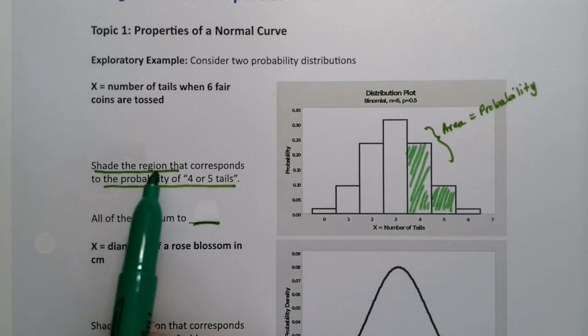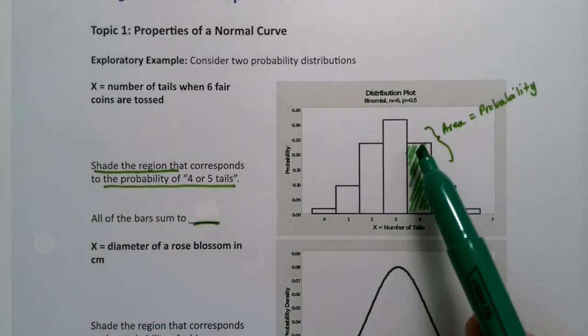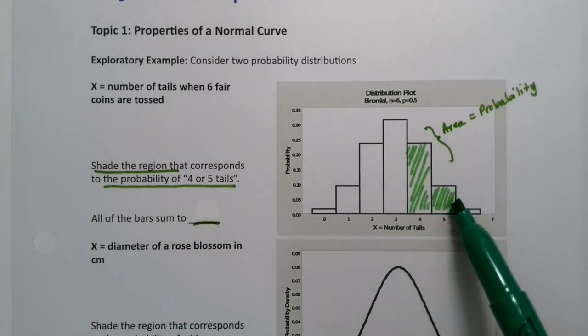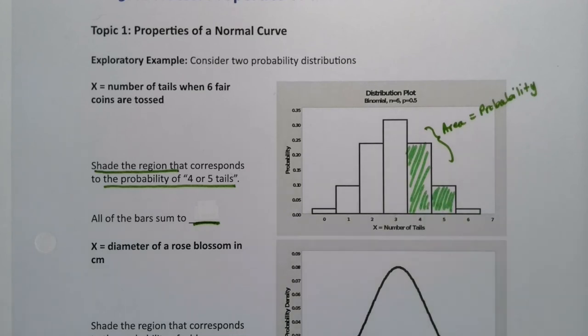It asks us to shade the region that corresponds to the probability of four or five tails. Four tails is right here, five tails right here, and if you add up those two areas, you would have the probability.